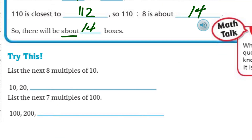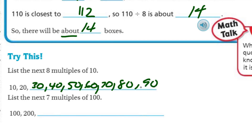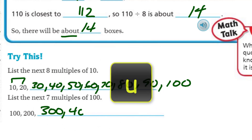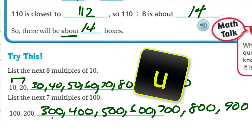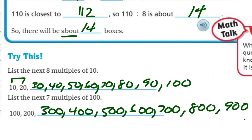What do we have here at the bottom? It says try this: list the next eight multiples of 10. So: 30, 40, 50, 60, 70, 80, 90, 100 — because two were already given, I needed eight more. And then: list the next seven multiples of 100 — 300, 400, 500, 600, 700, 800, 900. Is that seven? Yes it was — seven it is.